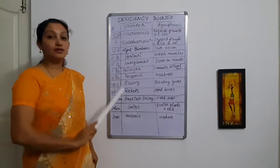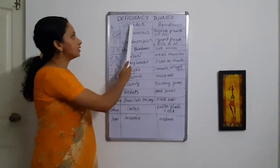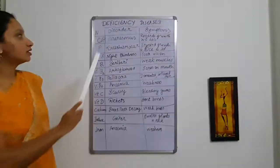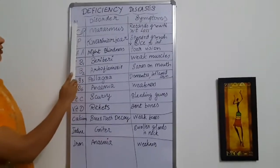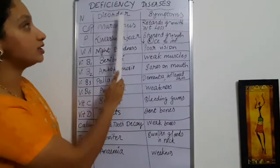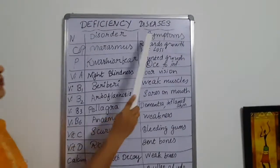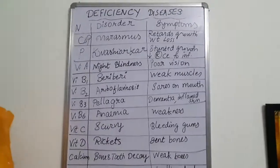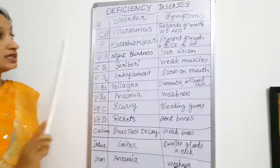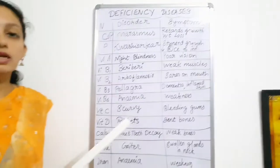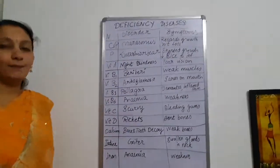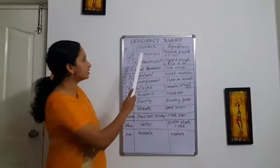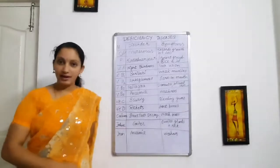Here I have written the main deficiency diseases which you are studying in 6th chapter. The first heading is nutrient, the second one is disorder or deficiency disease, and the third one is what are the symptoms caused by these disorders. The first one is C and P — C means carbohydrates, P means proteins. If a person has a deficiency of carbohydrates and proteins, it results in a type of deficiency disease called marasmus.